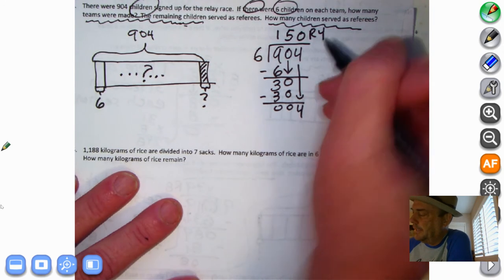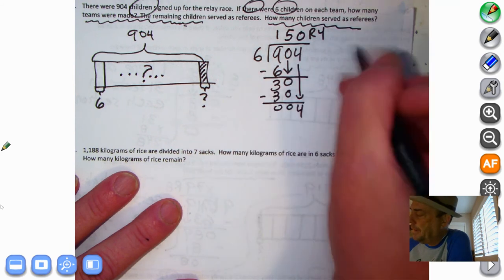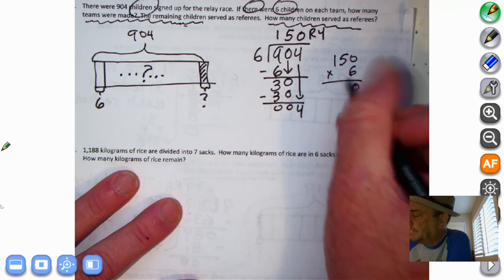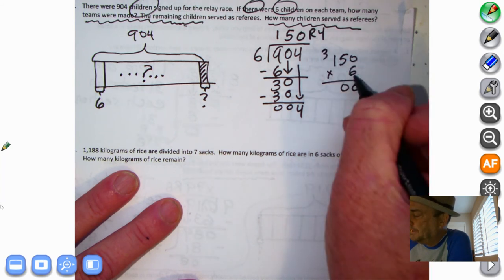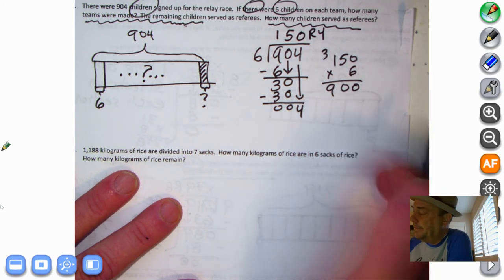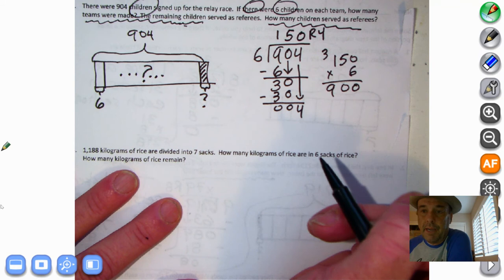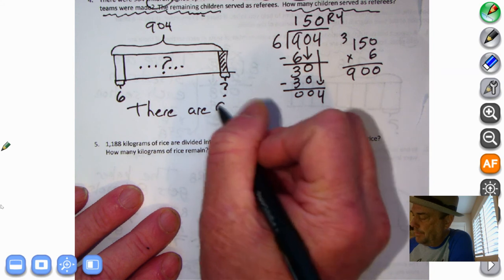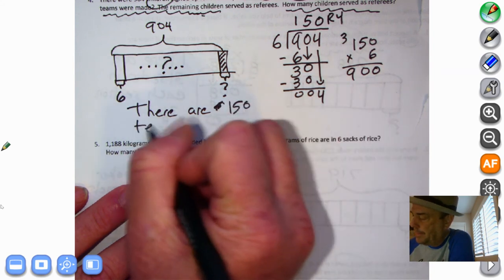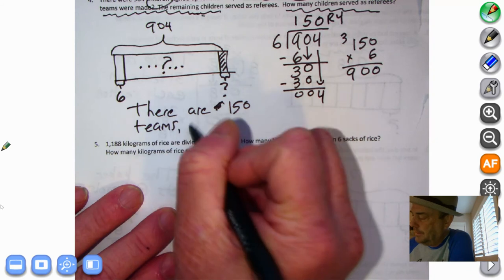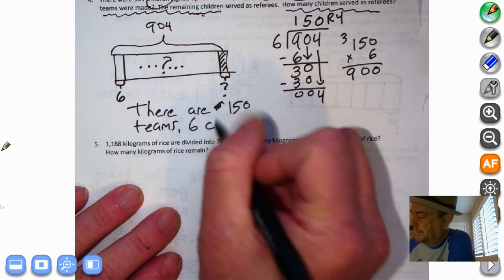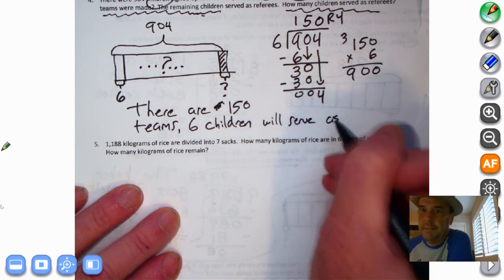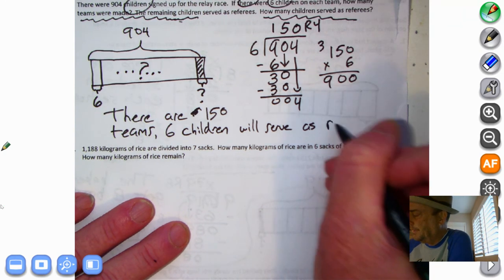Let's double check this. And we're going to take our quotient and multiply it by our divisor. So 150 times six. Zero times six is zero. Five times six is 30. One times six is six. Plus the three is nine. We have 900. Now, I don't need to do the math. I can say, okay, 900 plus four is 904, right? So there are 150 teams, six children will serve as referees. That's a fun word, referees.